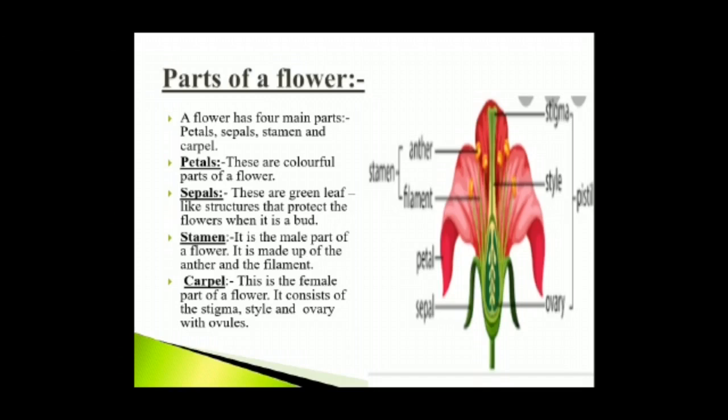Carpel is the female part of a flower. It consists of the stigma, style and ovary with ovules. The stigma is the sticky tip of the carpel. The long neck of the carpel is called the style. The broad base of the carpel is called the ovary; it contains one or many eggs called ovules. The transfer of pollen grains from the male part (stamen) to the female part (carpel) is called pollination.